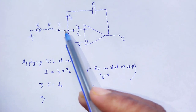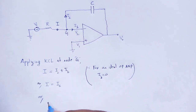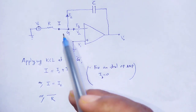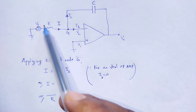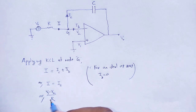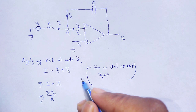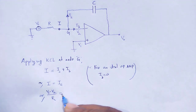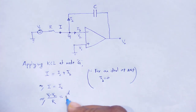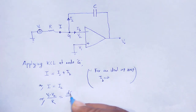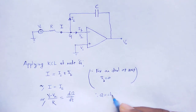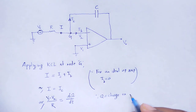The current I across resistor R — by Ohm's law, current is equal to potential difference divided by resistance, which is (Vs minus V2) divided by R. Next, the current across the capacitor having capacitance C — the expression is the rate of change of charge, dQ by dt, where Q is the charge on the capacitor.